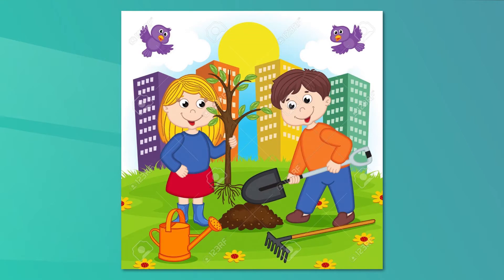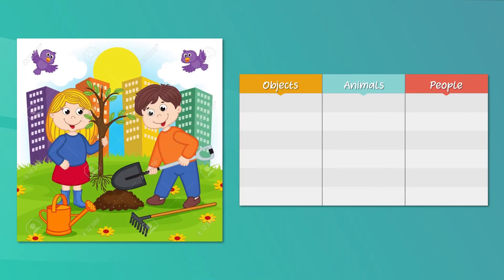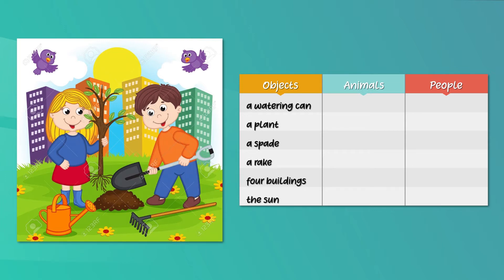Let's study this picture from left to right and fill in the grid. Let's do it together. What are the objects you can see? From left to right you can see a watering can, a plant, a spade and a rake. Then in the background there are four buildings. What about people? You can see two people here — a girl and a boy.